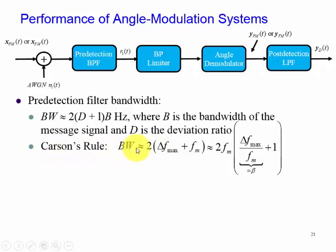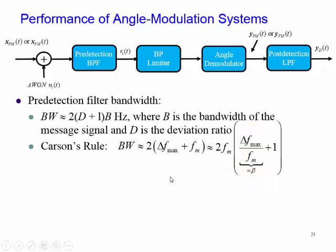This specific Carson's rule is associated with a sinusoidal signal. The generalized Carson's rule uses the deviation ratio D, where we replace the modulation index with the highest frequency of the message in the denominator. Beta is known as the frequency modulation index. Note the similarity between 2 fm times the quantity beta plus 1, which is specialized for the sinusoidal message, with the more generalized case: 2 times the quantity D plus 1 multiplied by B, which is the bandwidth of the signal.